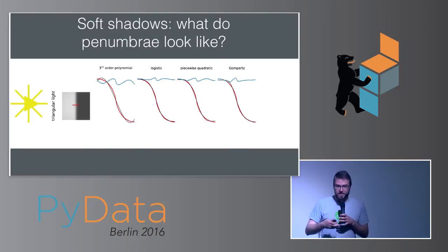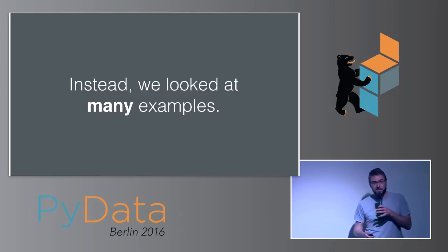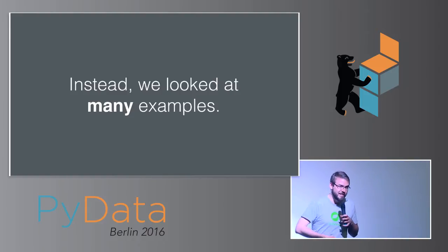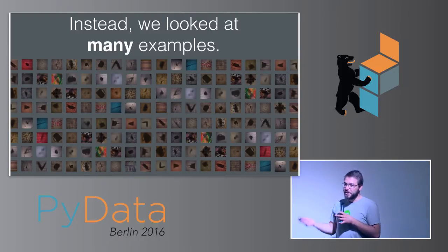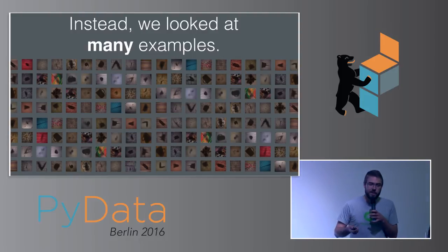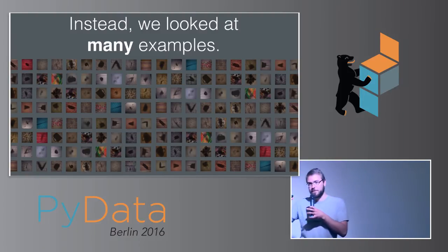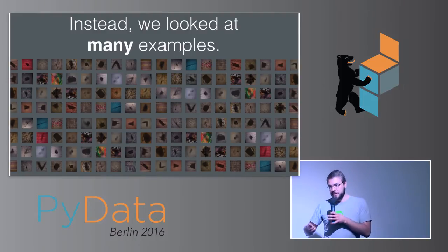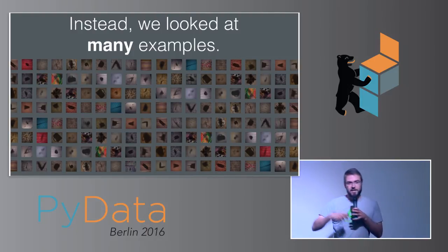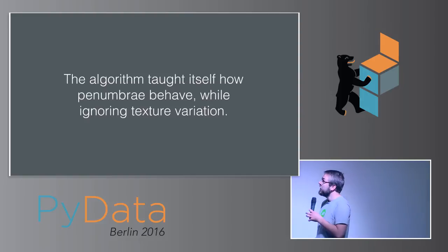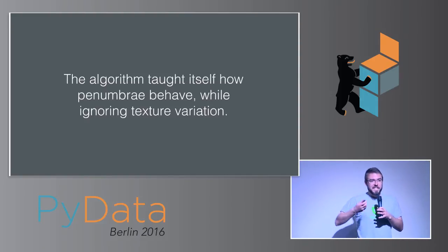Since we can't solve it in a principled mathematical way, we go to the other end of the spectrum and just look at lots of data to learn how penumbras look. If you only have real data you'd need millions of images, but the graphics community has been hard at work creating shadows, so we can just render ourselves a training set. Using Maya with some scripting for photorealistic rendering, we created tens of thousands of image pairs — one with shadow and one without — varying in texture, size, and penumbra width. This lets us learn the mapping from shadowed to unshadowed image.